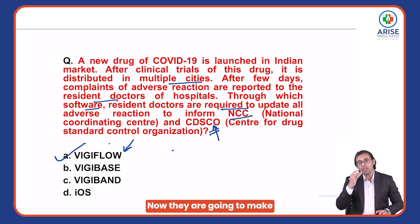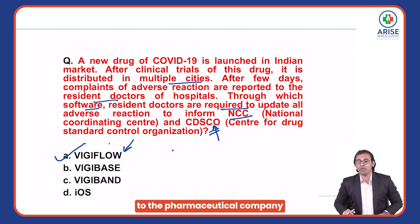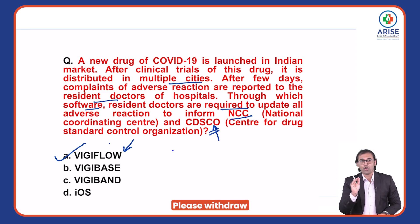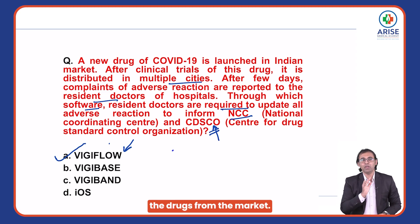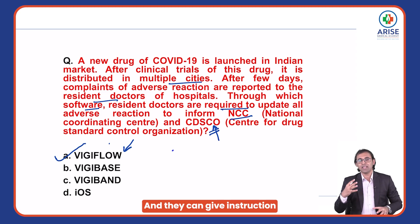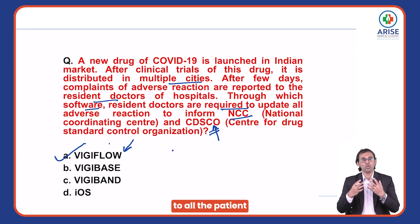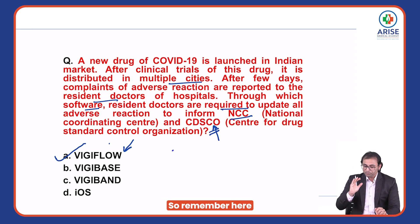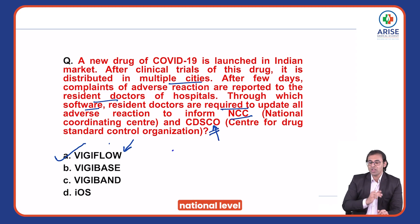They are going to make a phone call to the pharmaceutical company that your drug is having so many side effects — please withdraw the drug from the market. They can also give instruction to all patients to stop using this drug. Remember, the national level software is VG Flow.